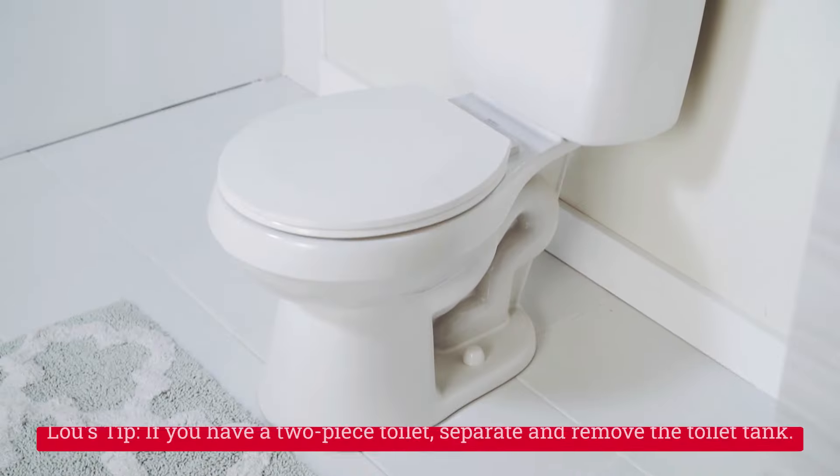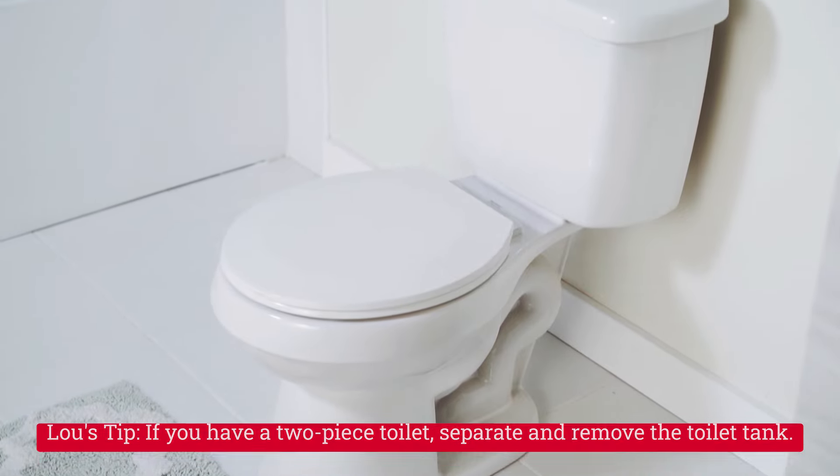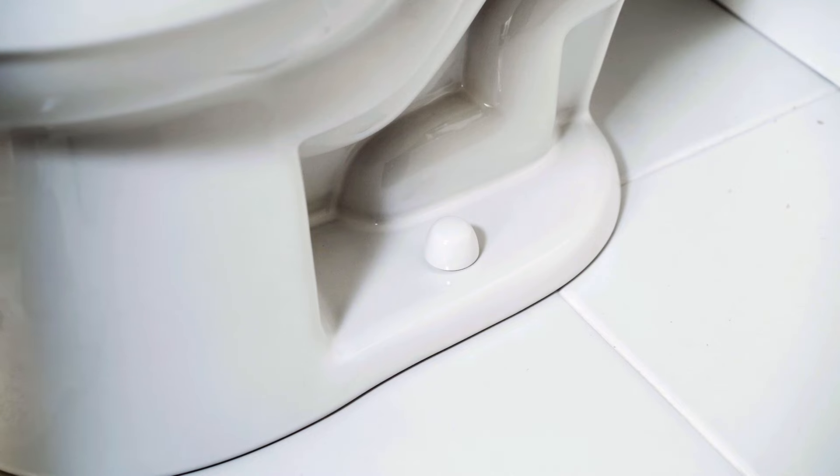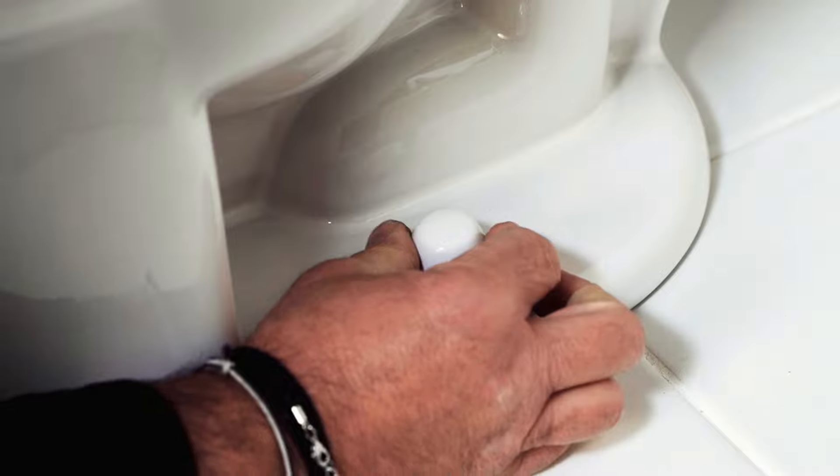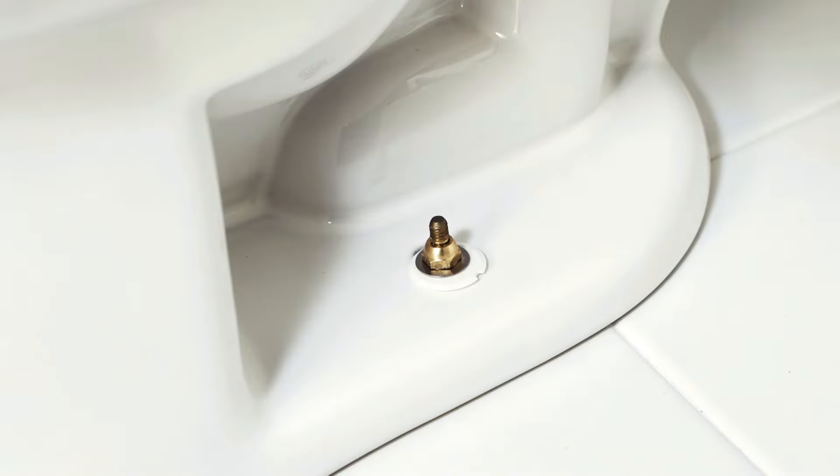Then the two bolts that are holding the toilet to the floor, commonly referred to as Johnny bolts, many times there's a plastic cap covering that just pops off, and you'll notice two nuts there that you're going to loosen.